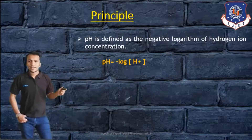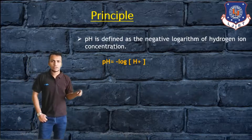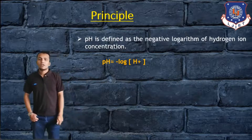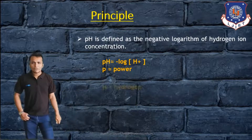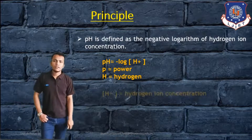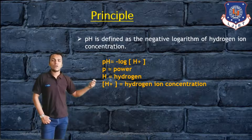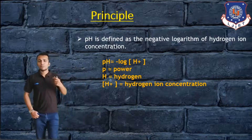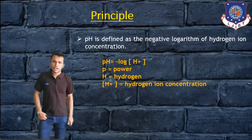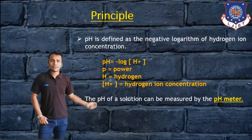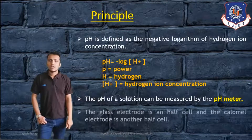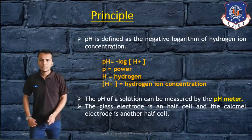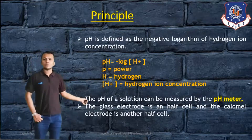pH is equal to minus log of [H+], that is the negative logarithm of hydrogen ion concentration. Here, P stands for power and H stands for hydrogen, and H+ is the hydrogen ion concentration. So that is the principle of how pH can be measured using this formula.